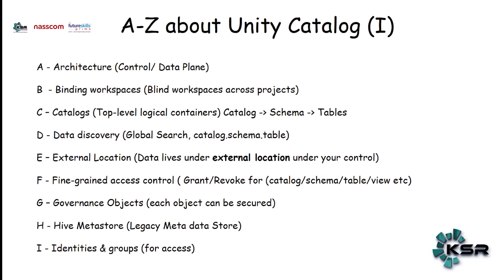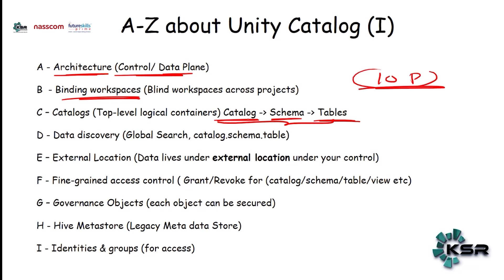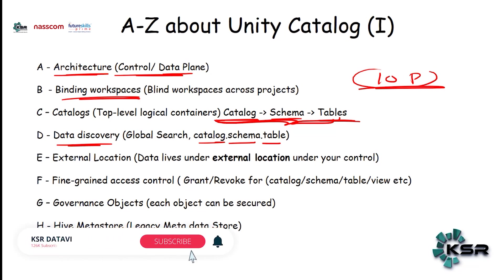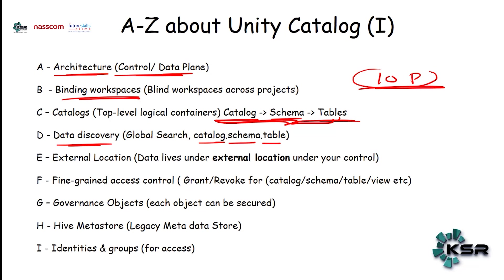Let me tell you A to Z about Unity Catalog. Architecture-wise, you can have control over the complete system and store data in the form of tables. Different projects have different workspaces and you can bind them together — across projects you can have access. The higher hierarchy is always catalog; inside catalog you have schemas; inside schema you have tables. From all workspaces — say 10 projects — they can all access the catalog data. For data discovery, you can simply search using catalog dot schema dot table to find any table rather than copying data into different workspaces.